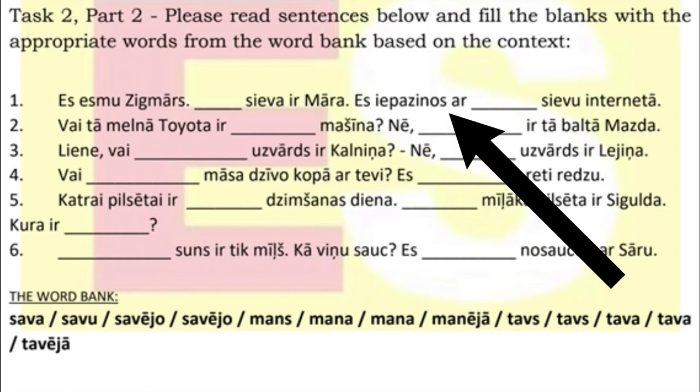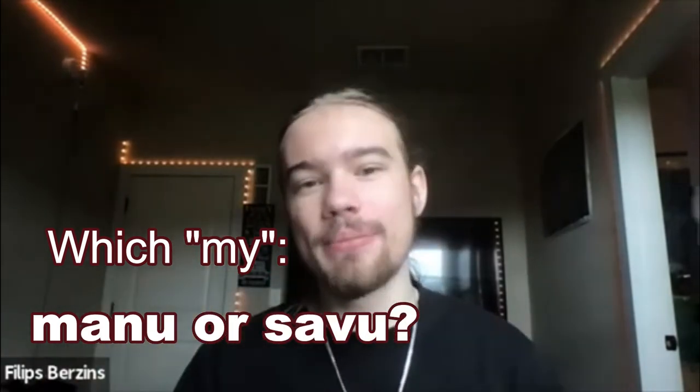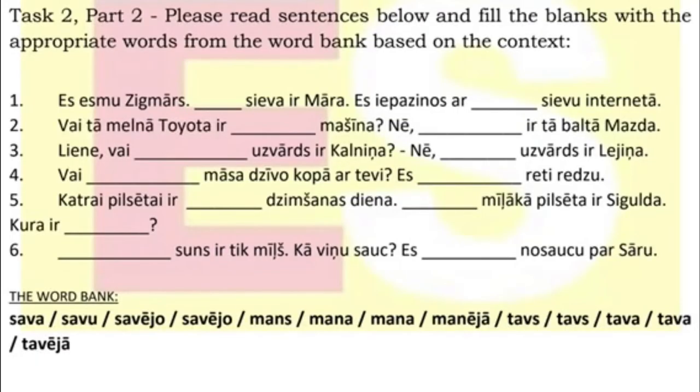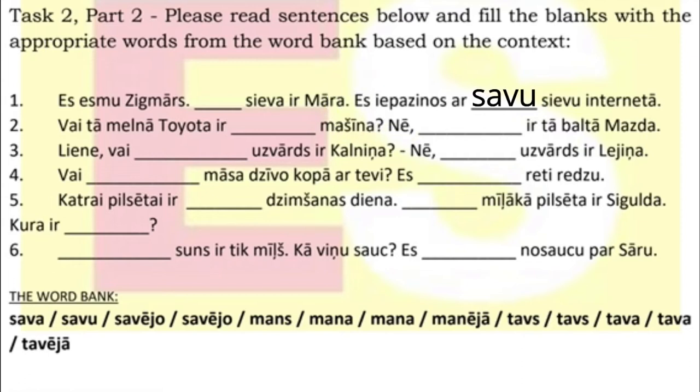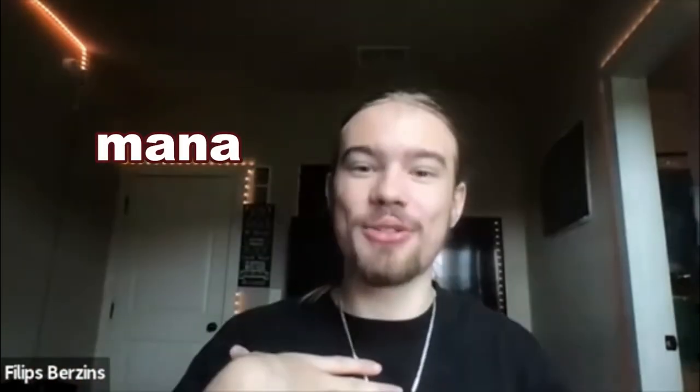I met my wife through the internet. So in this problem, in particular, you're supposed to insert the correct word for 'my.' The way you determine that is by looking at the sentence. If the sentence begins with 'I,' that means you're going to put in 'Savo.' So at the very end, when it says 'S Iepasinos,' that means 'I met,' and in that blank you're going to put 'Savo,' because you put 'S' or 'I' at the beginning, indicating that it is your wife. Versus in the previous sentence, you do not have 'S' — it's just a blank — wife is Mara, so you would say 'mana' to indicate that it's your wife, because there is no 'S' at the beginning.